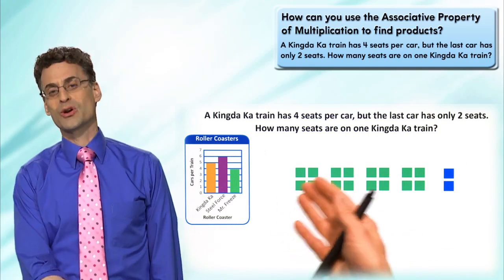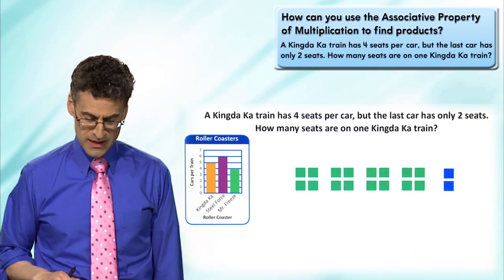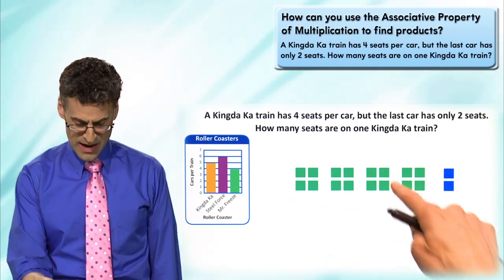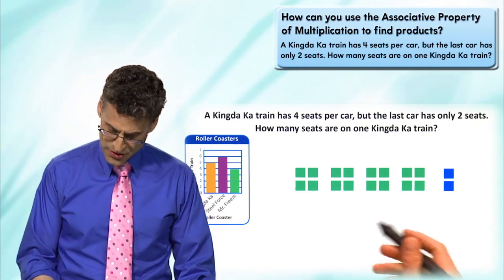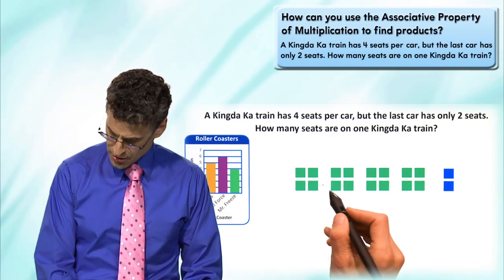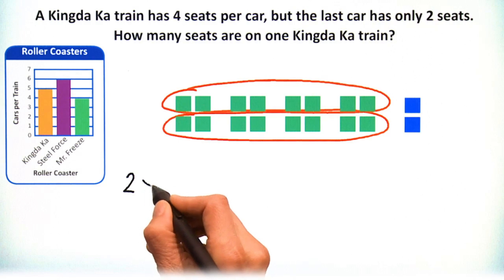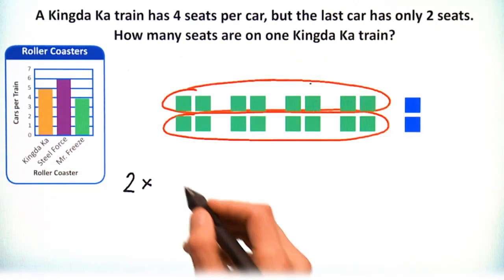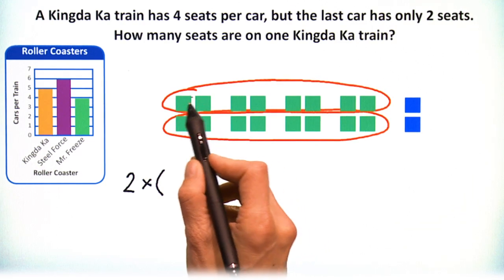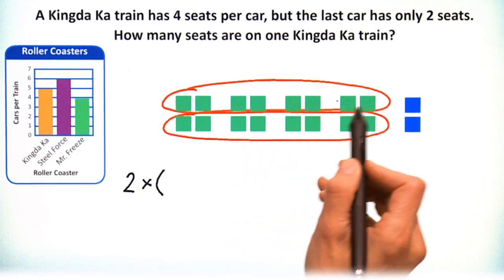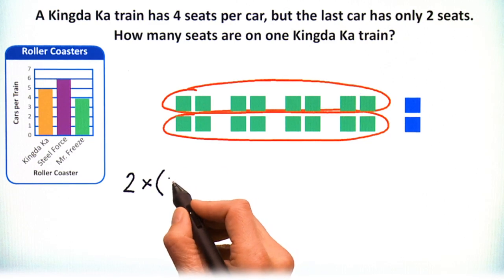You can just count the seats, but that's not the point. The point is to find different ways of systematically making sure we count everything correctly, because you might lose count going through. One way is to lasso these green cars together like this. How would I write that?